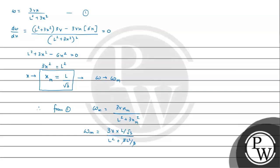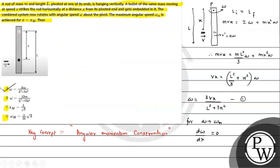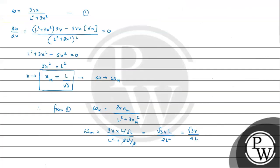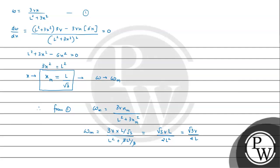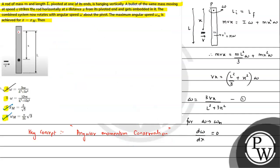This will become root 3 VL upon 2L square. Simplifying, we get root 3 V upon 2L. And that is our omega_M. Let's check: root 3 V by 2L. Yes, omega_M matches. Option C matches, option D matches. So A, C, D are our correct answers for this question. So I hope you understood the solution. All the best.